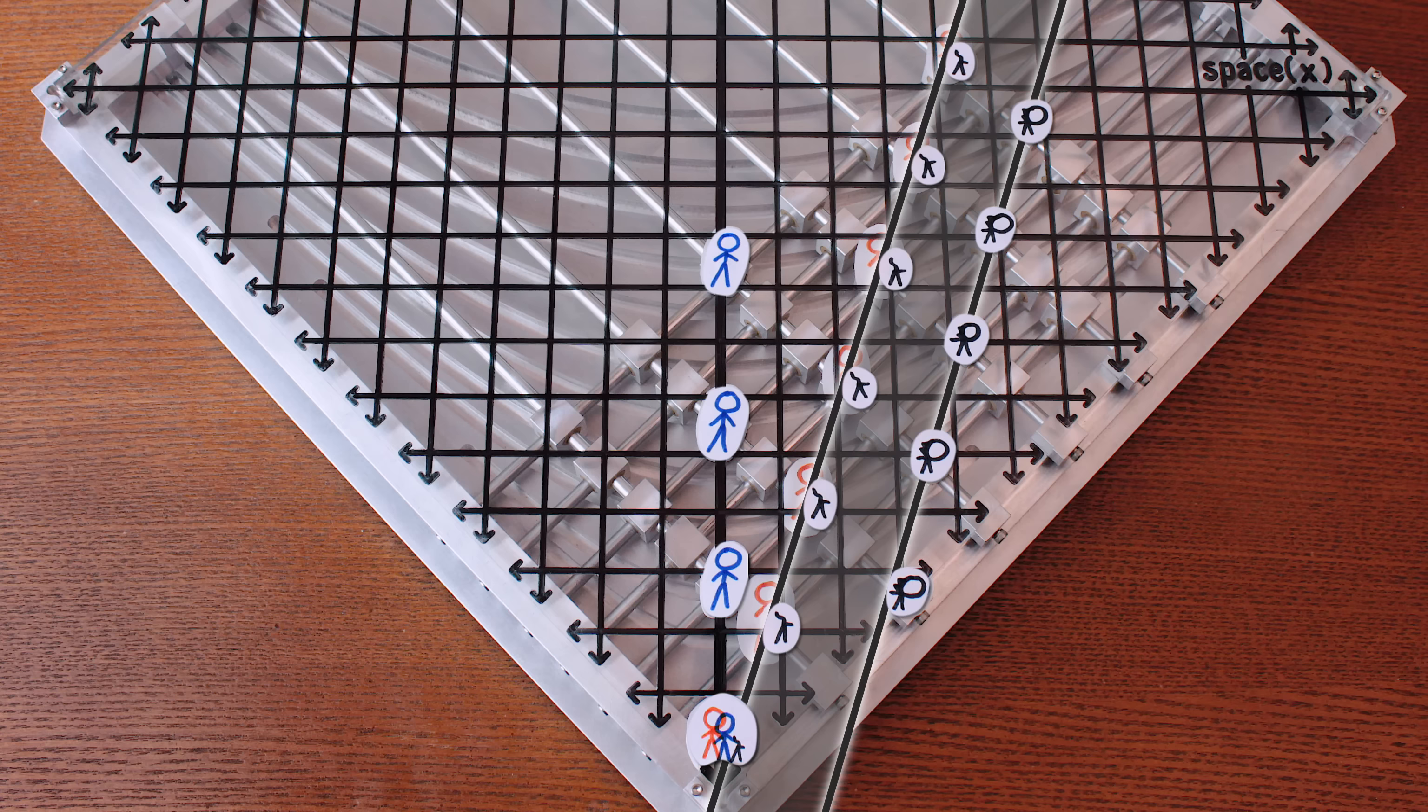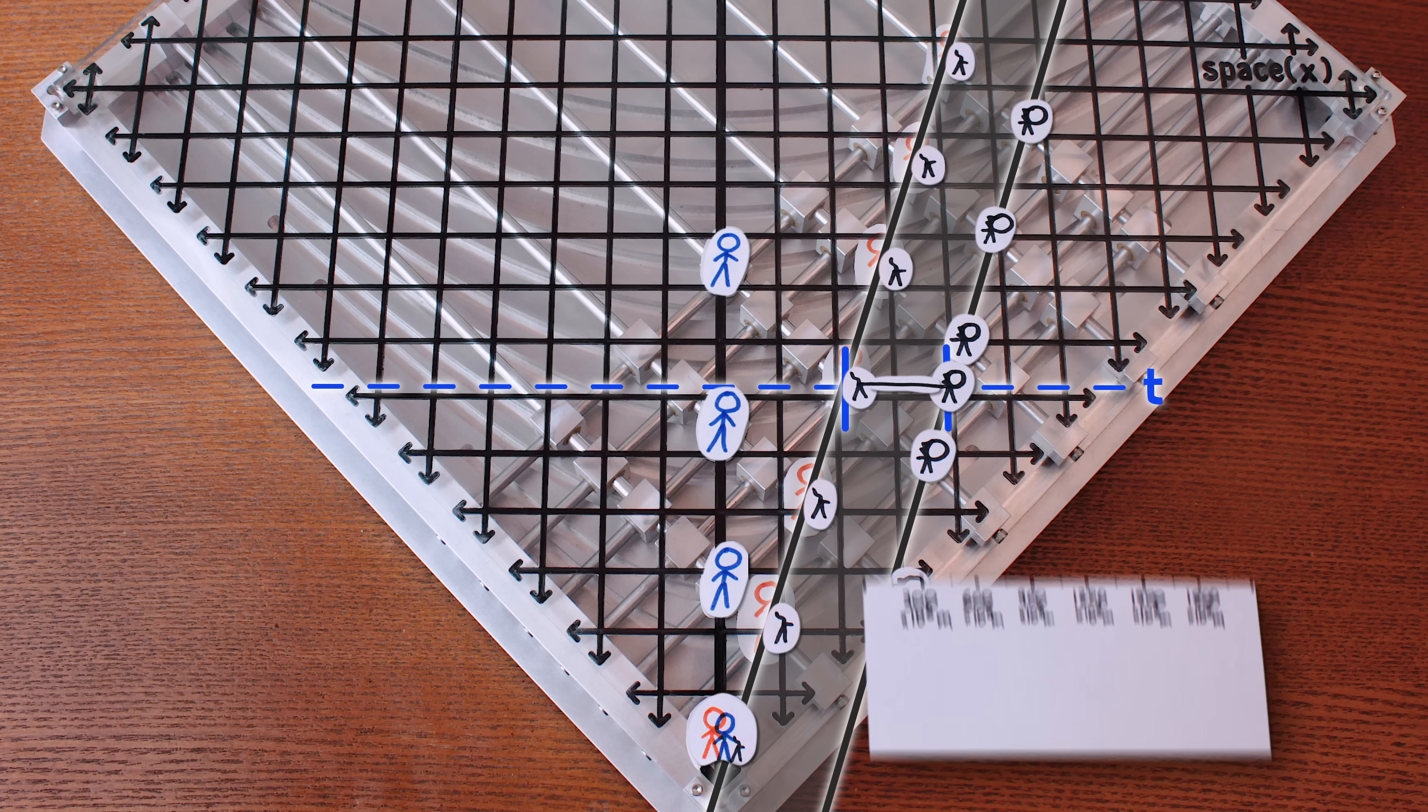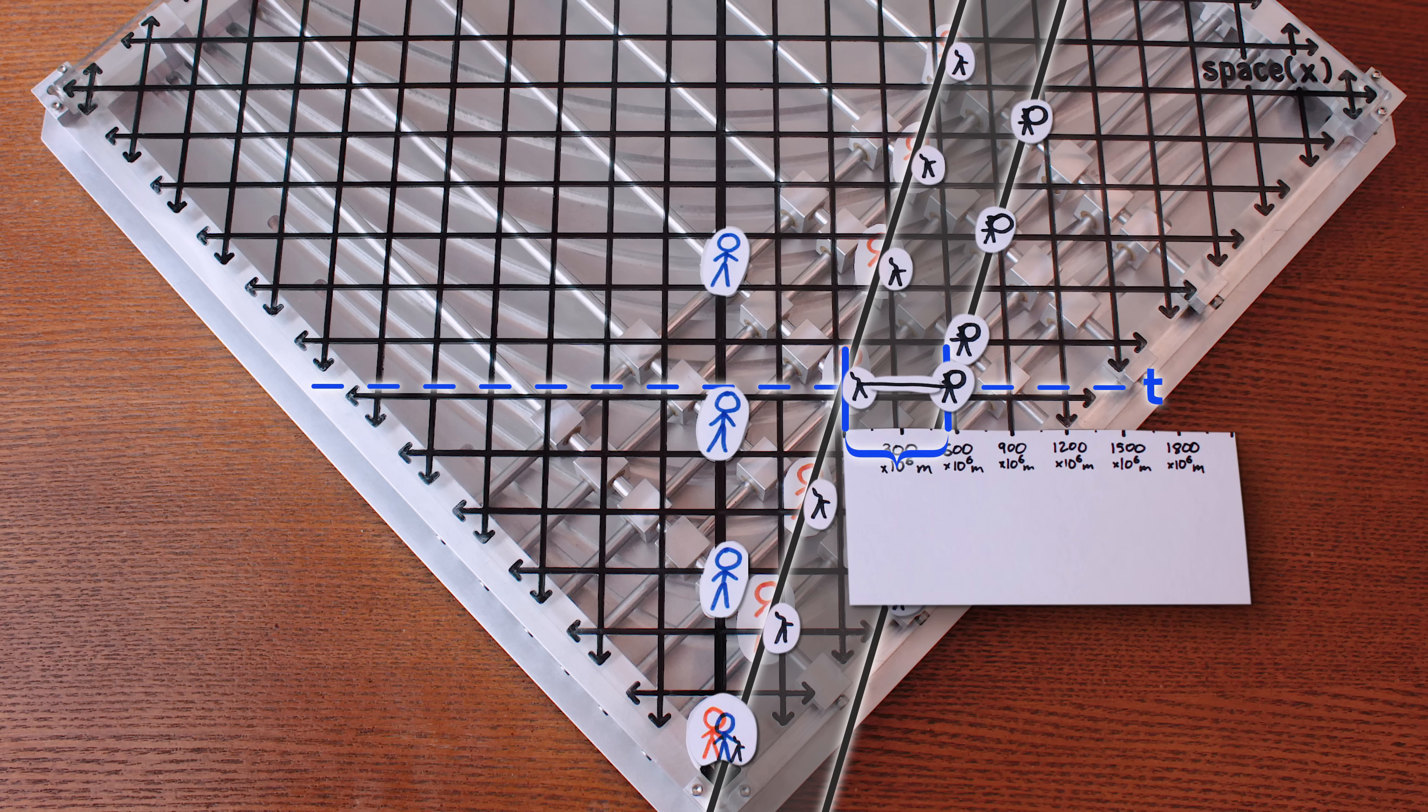So to correctly measure the length of the cat from your perspective, we need to measure the positions of its front and back at the same time according to your perspective, which is this distance here, which is clearly shorter, 566 million meters.